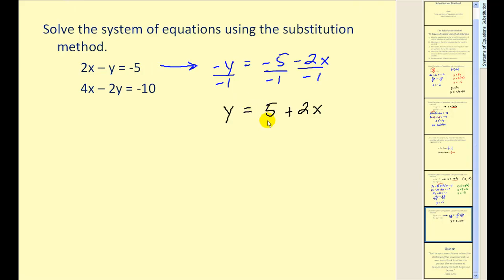So now we'll go to the second equation. Wherever we see y, we'll replace it with 5 plus 2x. So there's our y. When we write this, we're going to have 4x minus 2 times our y, which is 5 plus 2x, equals negative 10.